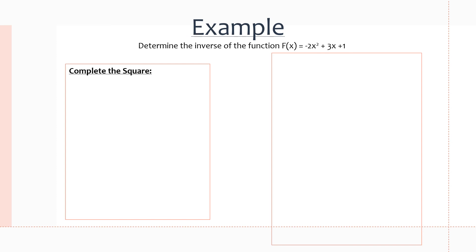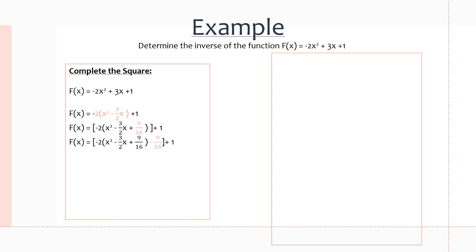I'll go over it really quickly. We take the original function and divide the first two terms by the coefficient, −2, to isolate the x² term on its own. Then we take the middle term, −3/2, divide it by 2 and square it. We add square brackets, and the reason we do that is because we need to subtract 9/16 on the outside but keep it within the square brackets. Now we have a perfect square through x² − (3/2)x + 9/16, which gives us (x − 3/4)².